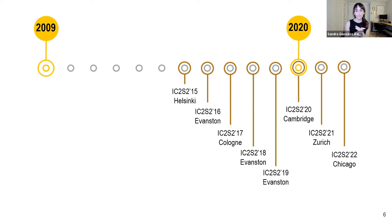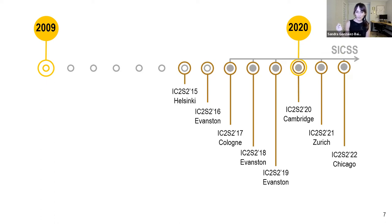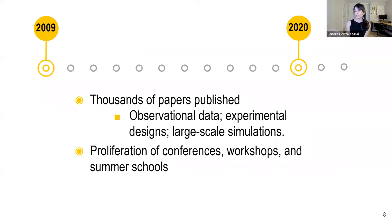Participants in these conferences include academics and researchers with backgrounds in economics, sociology, political science, psychology, computer science, statistics, and more. The Summer Institute in Computational Social Science was launched by Matt Salganik and Chris Bail in 2017 — the first edition hosted at Princeton, then Duke, then becoming a huge global network of locations including Singapore today. In this ten-year period, the field of computational social science exploded in prominence, with thousands of papers published using observational data, experimental designs, and large-scale simulations.